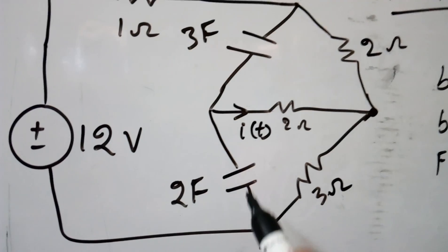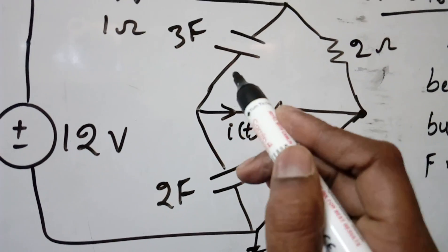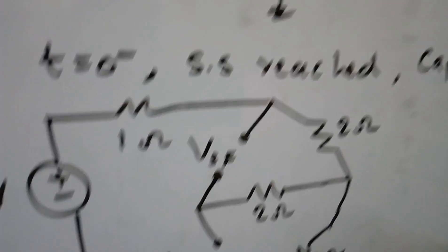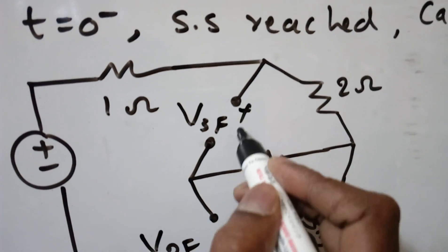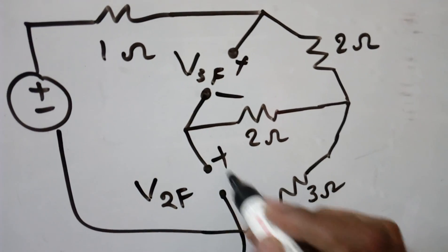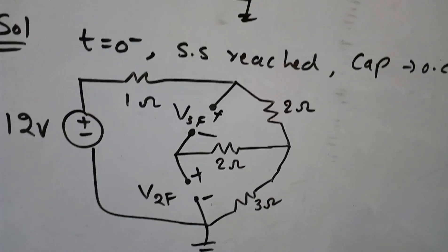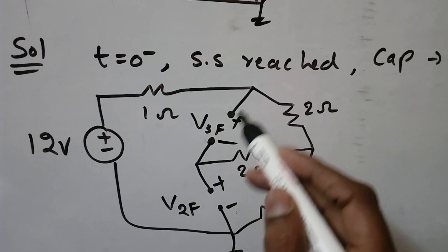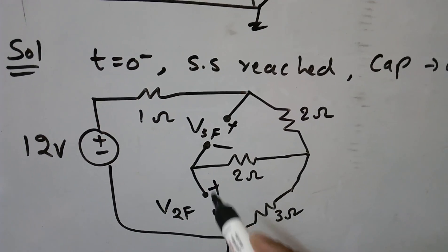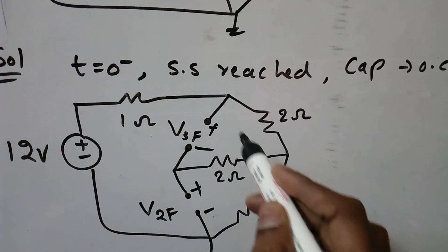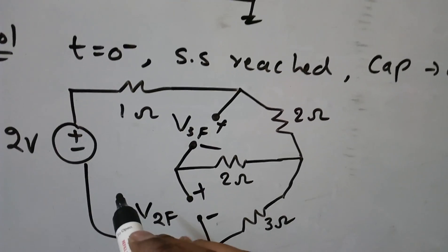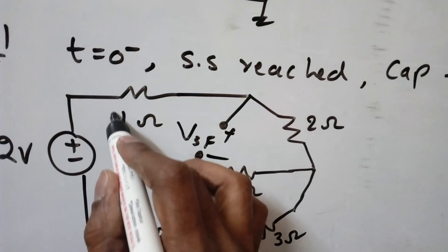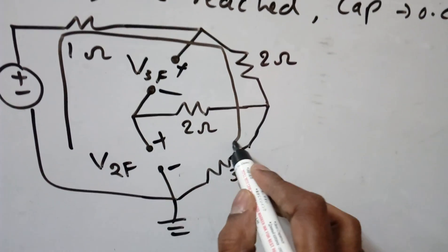This is the problem. So these two capacitors are there. So this will be open circuit as well as this will be open circuit, like this. But we need to find the capacitor voltages V3F and V2F. Now see if we observe carefully, this is open circuit, no current is coming. This is also open circuit. See, these three are simply open. So only we will get one KVL across this loop.